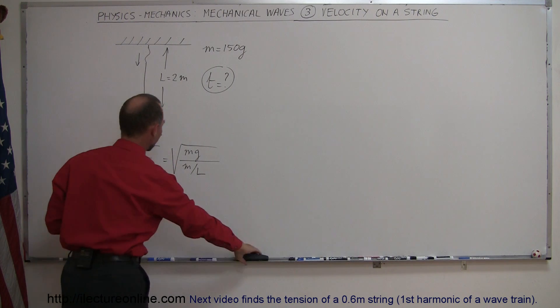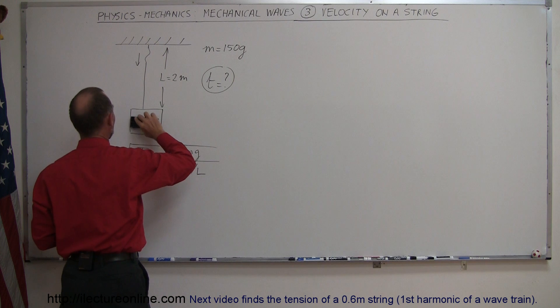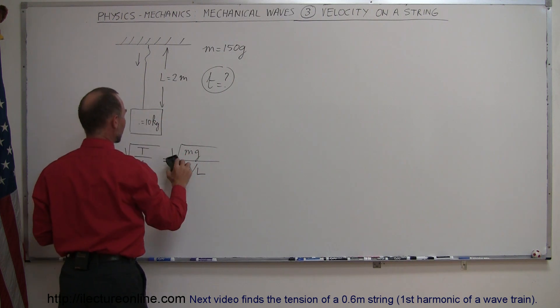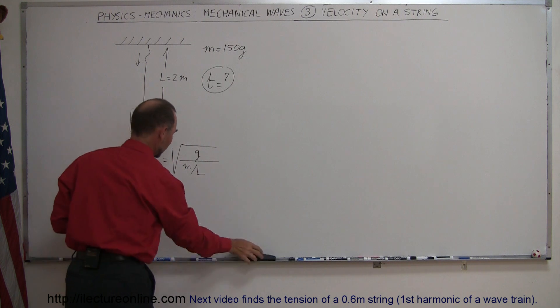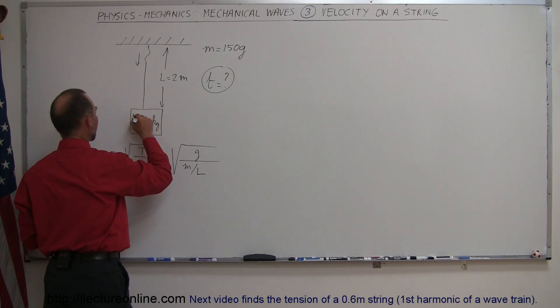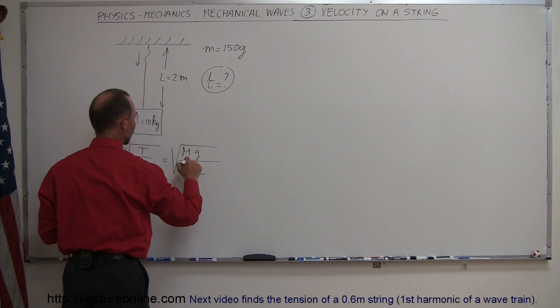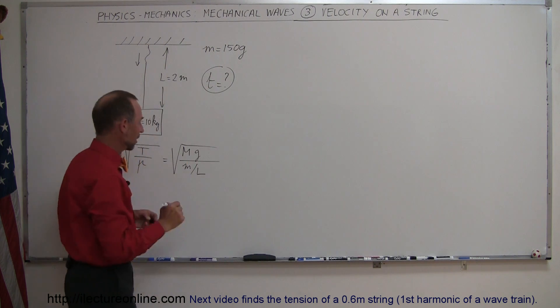Now notice that I don't want to call the mass of the string and the mass of the weight the same variable, so let's make this a big M and a small m to differentiate. It's always better for clarity, so the big M is 10 kilograms, the small m is the mass of the string.